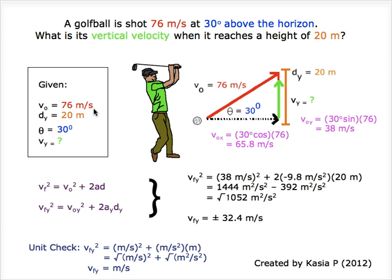The 76 meters per second in red represents the initial velocity. The 20 meters in orange is the vertical distance.